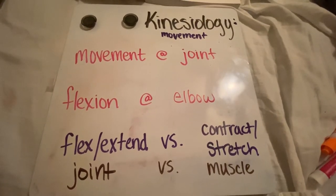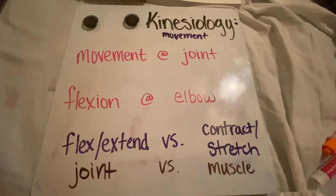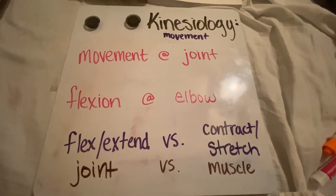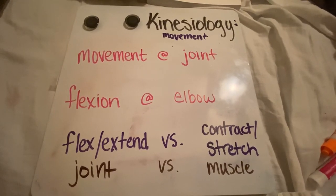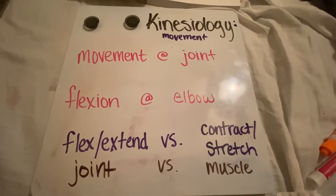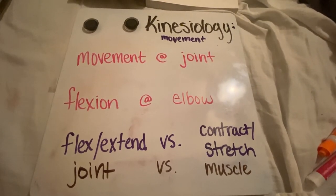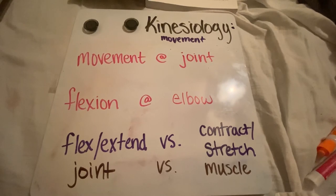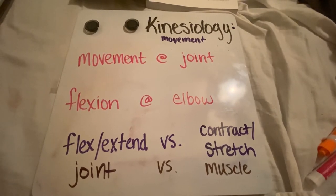When we look at the elbow, for example, flexion happens at the elbow joint because of the biceps brachii contracting. The muscle causes the action, but the action happens at the joint.